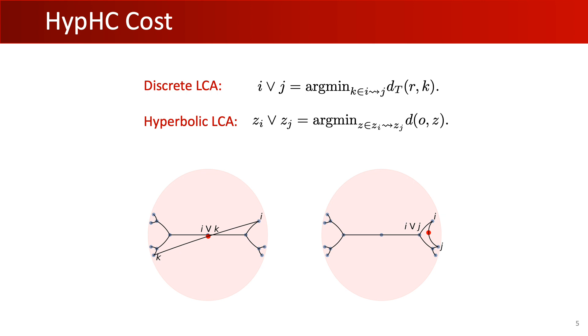The second step in HypHC is the relaxation of Dasgupta's discrete cost, which can be written using conditions on the lowest common ancestors. Given two nodes in a rooted binary tree, their LCA is the point on their shortest path that is closest to the origin. Similarly, we define the hyperbolic LCA between two leaves embeddings as the point on their geodesic that minimizes the distance to the origin.